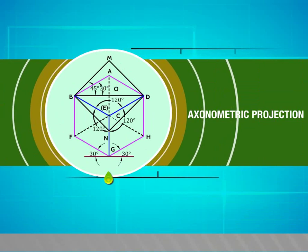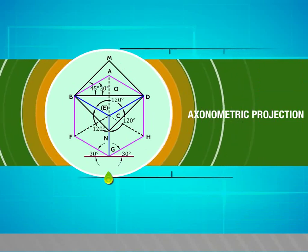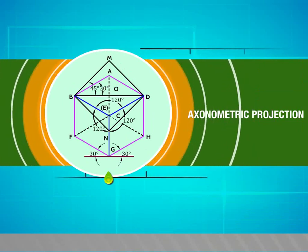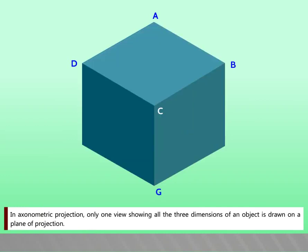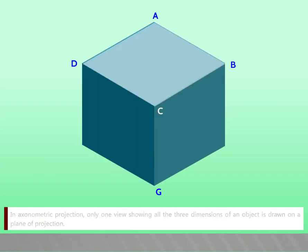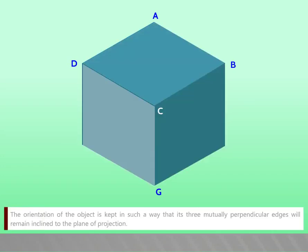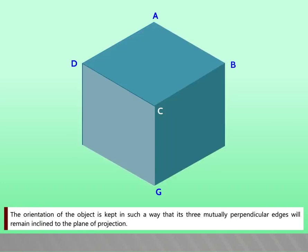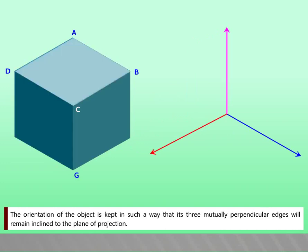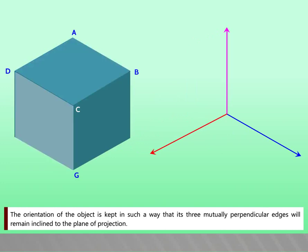In this video we are going to see about axonometric projection. In axonometric projection, only one view showing all the three dimensions of an object is drawn on a plane of projection. The orientation of the object is kept such that its three mutually perpendicular edges remain inclined to the plane of projection.